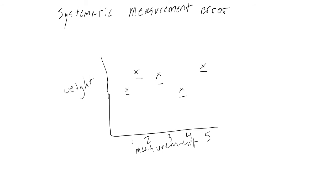When measurement error follows a pattern, like the scale consistently overestimating people's weight, we call this systematic measurement error.